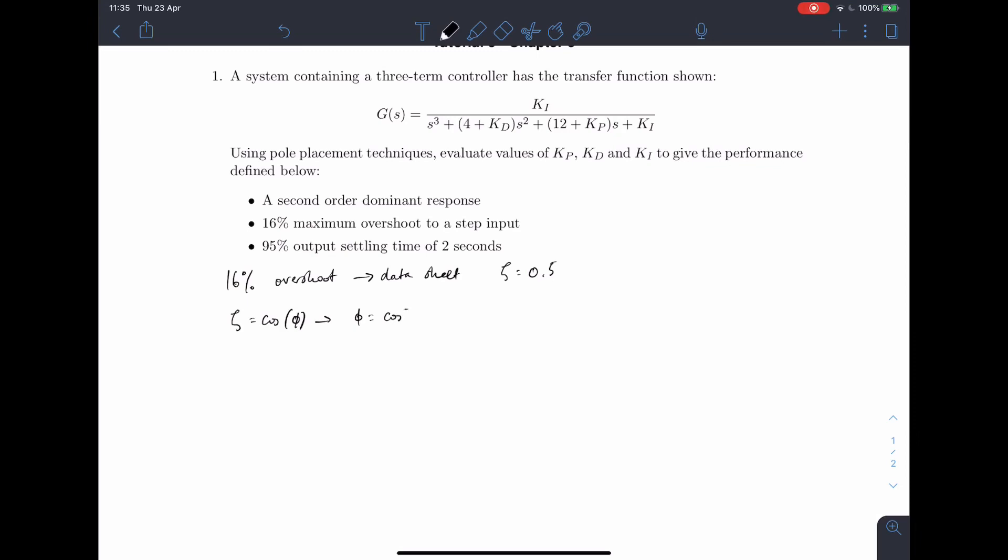So the inverse cosine of 0.5, and that angle comes out to be 1.0472 radians.